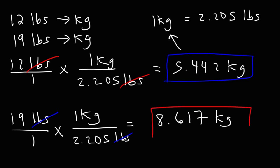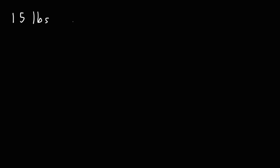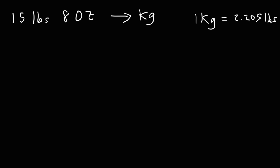Now you know how to convert from pounds to kilograms and from kilograms to pounds. Here's the next question: if we have 15 pounds and 8 ounces, how can we convert this to kilograms? Keep in mind that 1 kilogram is 2.205 pounds, and also that 1 pound is equal to 16 ounces. So there are two conversion factors you need. Go ahead and pause the video and think about it.